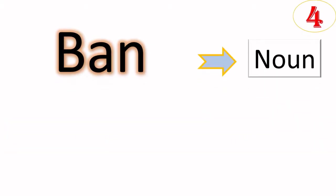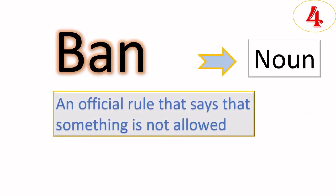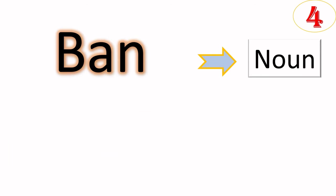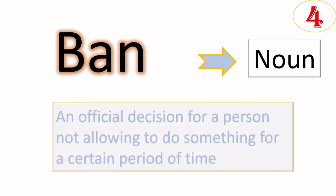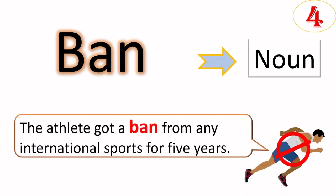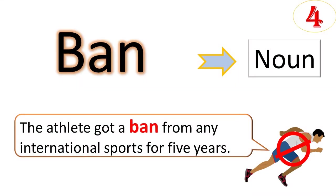As noun, ban can mean an official rule that says that something is not allowed. The example can be the country has imposed a total ban on importing alcohol. As noun, ban can also mean an official decision for a person not allowing to do something for a certain period of time. An example can be the athlete got a ban from any international sports for five years.